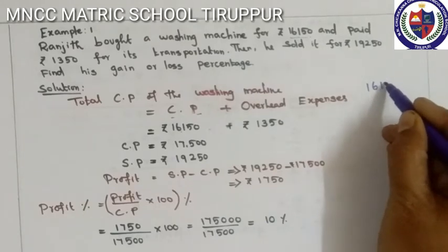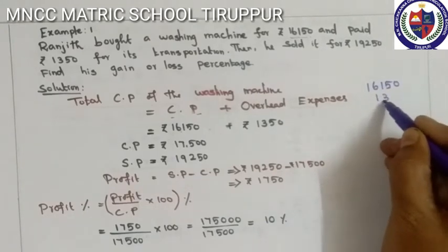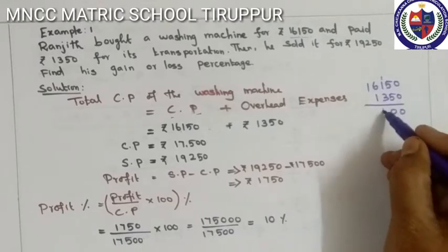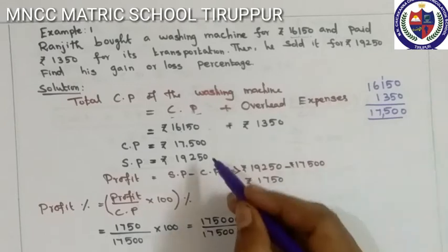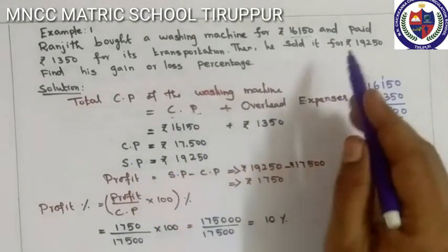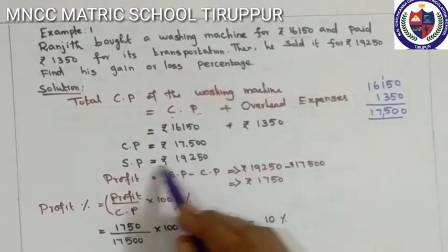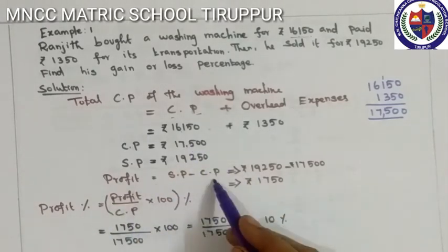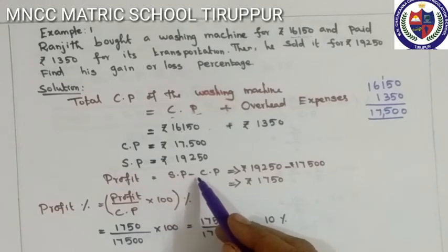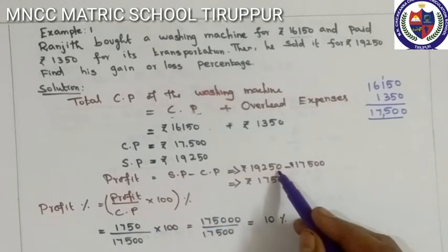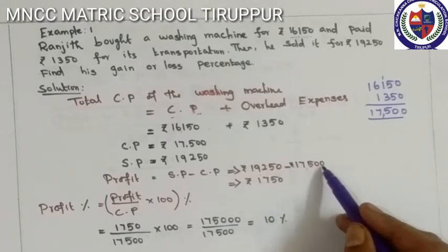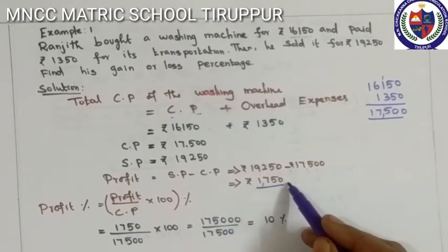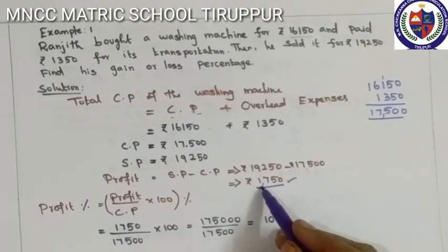Total Cost Price is Rs. 17,500. Selling Price is Rs. 19,250. Since Selling Price is greater than Cost Price, we get a Profit. Profit equals Selling Price minus Cost Price: 19,250 minus 17,500 equals Rs. 1,750 profit. So Ranjit gets a profit of Rs. 1,750.